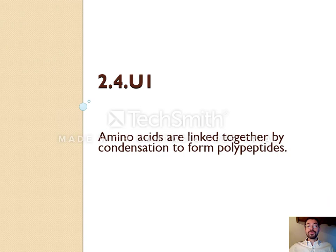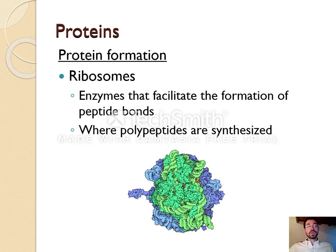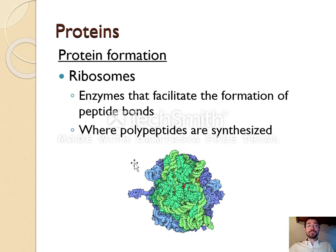As a quick bit of review, remember that amino acids are linked together by condensation reactions to form polypeptides. Moreover, there are 20 different amino acids that can be linked together to make these different polypeptides. Now these are made by ribosomes. Ribosomes are basically like enzymes — they are small molecular machines that facilitate making the peptide bonds between amino acids. And what that means is ribosomes are where polypeptides are made.